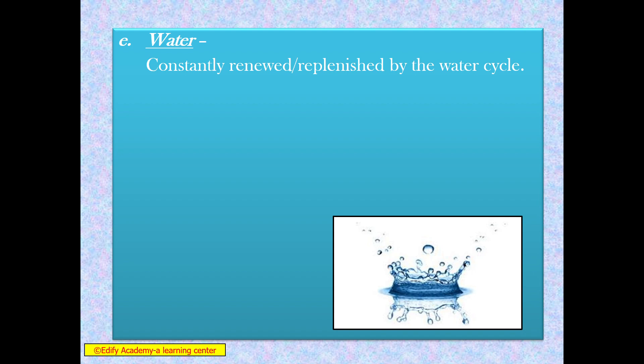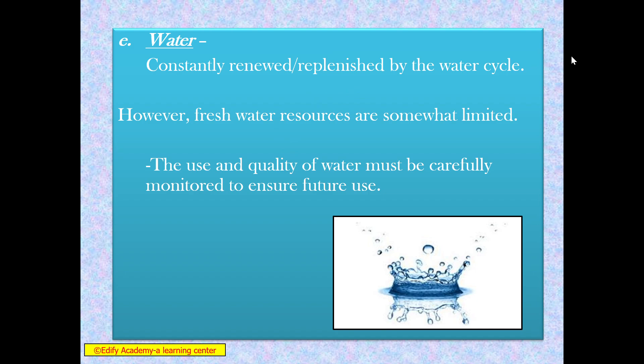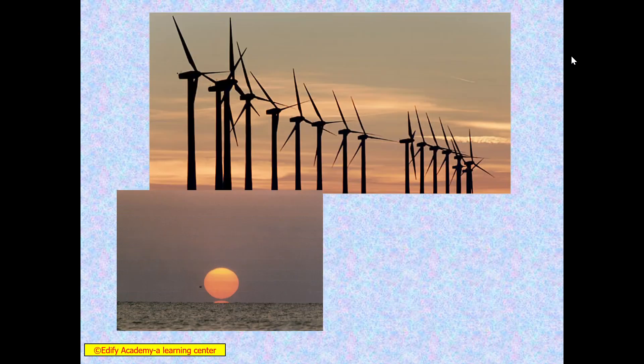Next is water. Water is constantly renewed and replenished by the water cycle. If we create an imbalance, it will affect the generation of water. However, fresh water sources are somewhat limited. Even though the whole earth is around 70–75% water, drinking water is not unlimited. So we have to save water. The use and quality of water must be carefully monitored to ensure future use. These pictures depict windmills, water, and water bodies. Next is biomass.